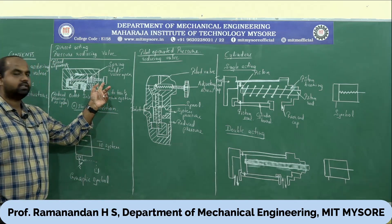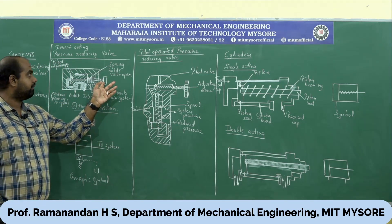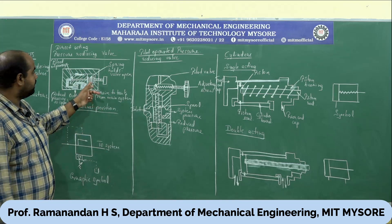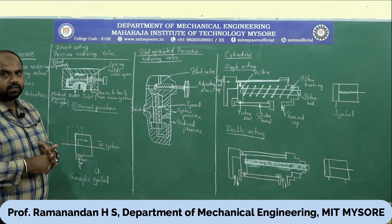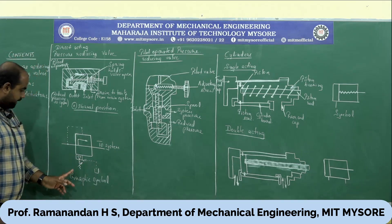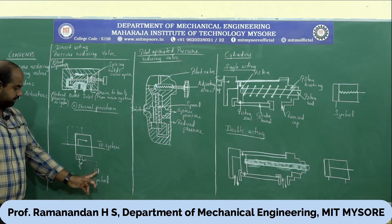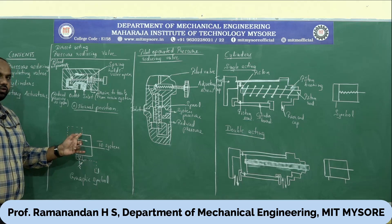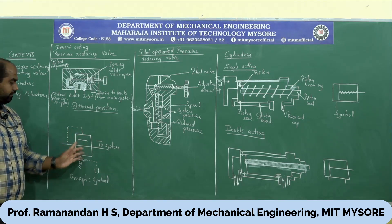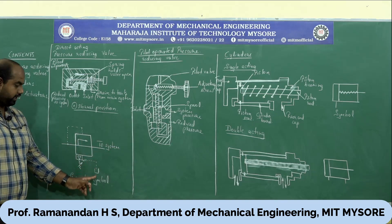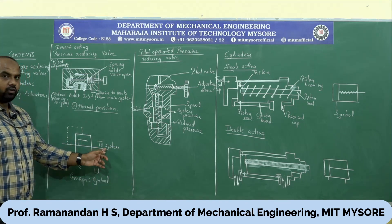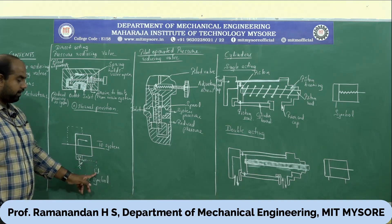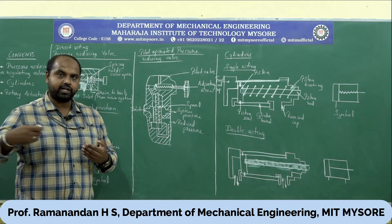The set pressure depends on the adjusting screw for the total function of the direct acting pressure reducing valve. It is called direct acting because the bleed oil is always in direct contact with the spring. The graphic symbol shows the drain to the tank and the pilot line. Whenever there is excess pressure, the oil goes directly to the tank through the drain — excess oil or air gets drained out to the tank.